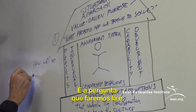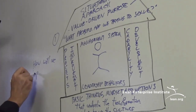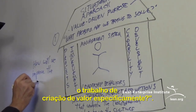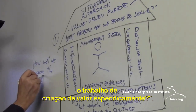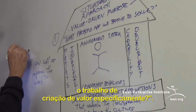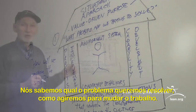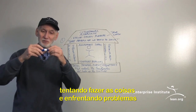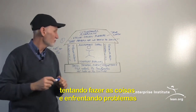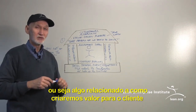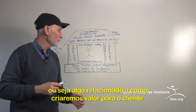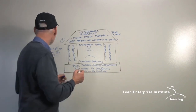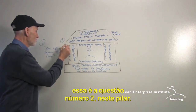Then we move to process improvement, and the question we ask is: how will we change the work — the value-creating work itself? We know what problem we're trying to solve, so how are we going to actually change the work? Whether it's a worker on an assembly line, a back-office operation, or knowledge work — how will we change the actual work? That's question number two, and it relates to the process improvement pillar.